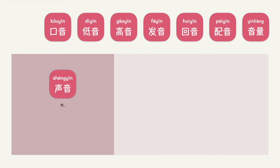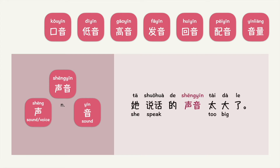声音. 声音 is a noun. 声音 means sound or voice. 音 means sound. Put into context, you can say: 他说话的声音太大了。 What do you think 声音 means? 声音 means sound or voice. Note that the 太…了 structure can be used for both negative and positive notions. For more details, please check out the link below.